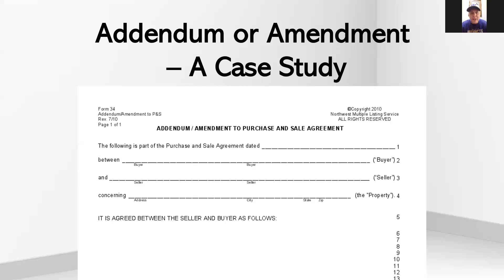And an amendment is something that later, after we'd already had mutuality, is used by the buyer and seller to change or amend the previously agreed-to terms. So in most cases, an amendment is going to always supersede the addendum, if there's a conflict or misunderstanding between the two.